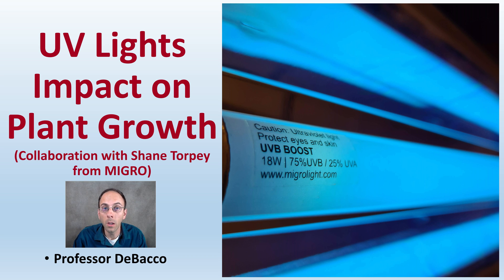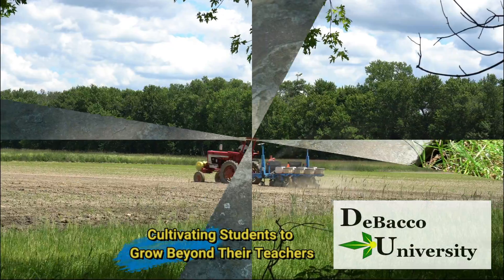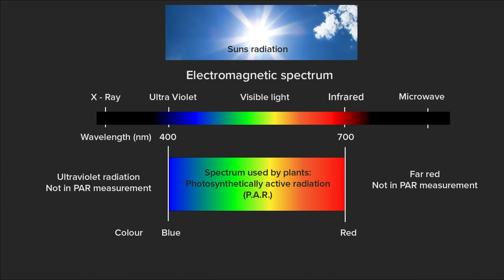On this DeBacco University video, we'll be learning about what UV light is and looking at some data on the impact on terpene production through this collaboration with Shane from Migro. Welcome again, Shane from Migro. Here we are discussing light and different wavelengths. We've talked about PAR, blue, red, and green wavelengths of light, and also did another video on far red, which is one end of the spectrum. Now we're going to go to the other end of the electromagnetic spectrum, talking about UV light.